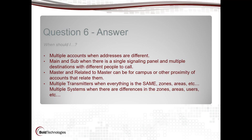Master and related-to-master can be for campuses or proximity of related accounts. I generally use this for senior communities where you might have multiple buildings — your main building is the master account and other buildings are related to it, so if multiple things happen from multiple locations you have tracking of what's happening. Multiple transmitters work when everything is the same — zones, areas, etc. Multiple systems are used when there are different zones, different areas, different users. For example, a digital dialer and a radio backup that only sends four zones is a separate system. But if both send exactly the same thing through two different paths, those can be two transmitters on the same system.